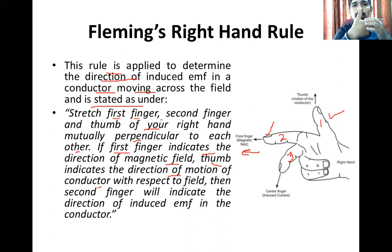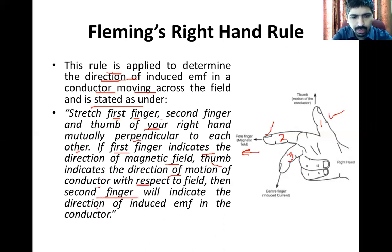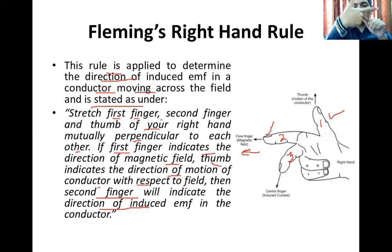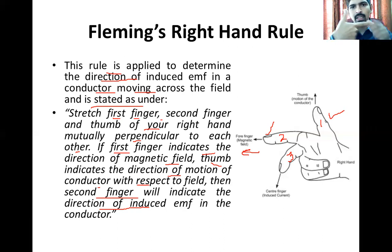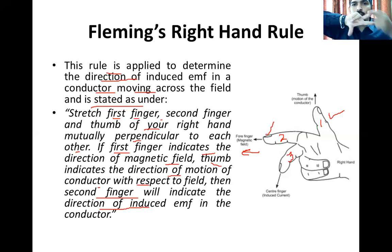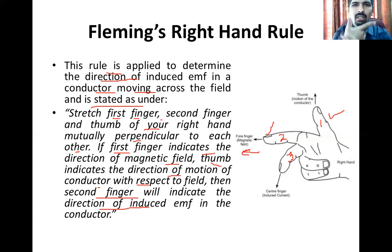The thumb indicates the direction of motion of the conductor — for example, upward. With respect to the field, the second finger will then indicate the direction of induced EMF. So if the magnetic field is in one direction and the thumb points upward, the middle finger tells us the direction of induced EMF. The fingers must remain 90 degrees perpendicular to each other.